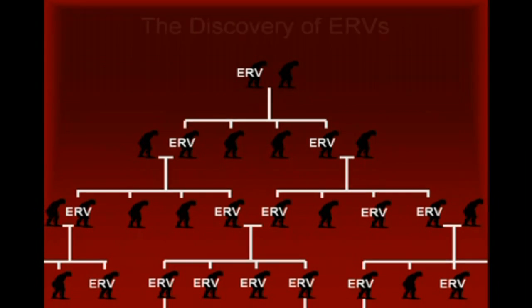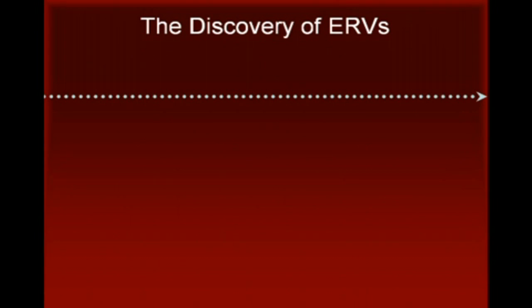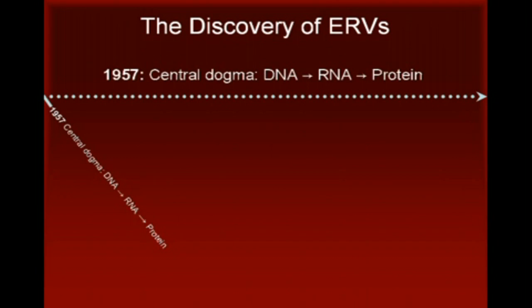What follows is a brief history of scientific discoveries concerning endogenous retroviruses. The so-called central dogma of molecular biology was first enunciated by Francis Crick in 1957. This proposition stated that once information gets into a protein, it cannot get back to DNA again. In other words, information flow in the cell goes from DNA to RNA to protein, and not in the other direction.